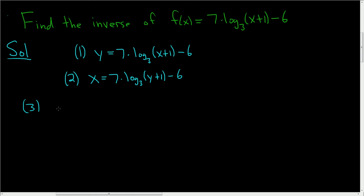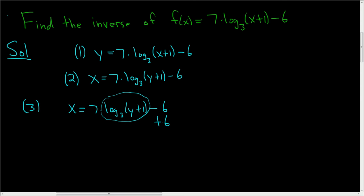The third step is the hardest step. This is the step where we actually have to solve for y. We have x equals 7 times the log base 3 of y plus 1, minus 6. We have to solve this for y, so it's a good idea to isolate the log term first. We'll add 6 to both sides, so we have x plus 6 equals 7 times the log base 3 of y plus 1.